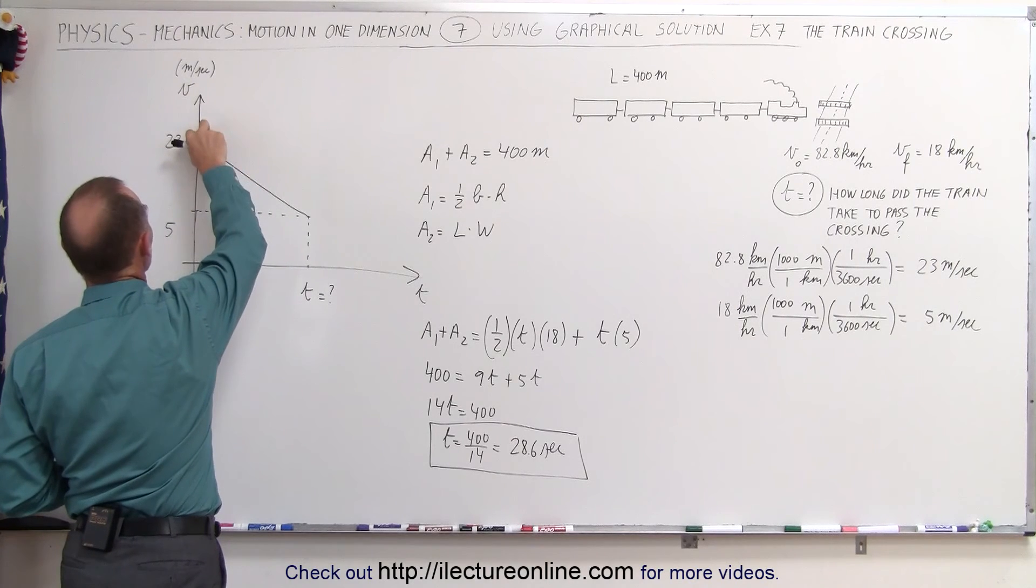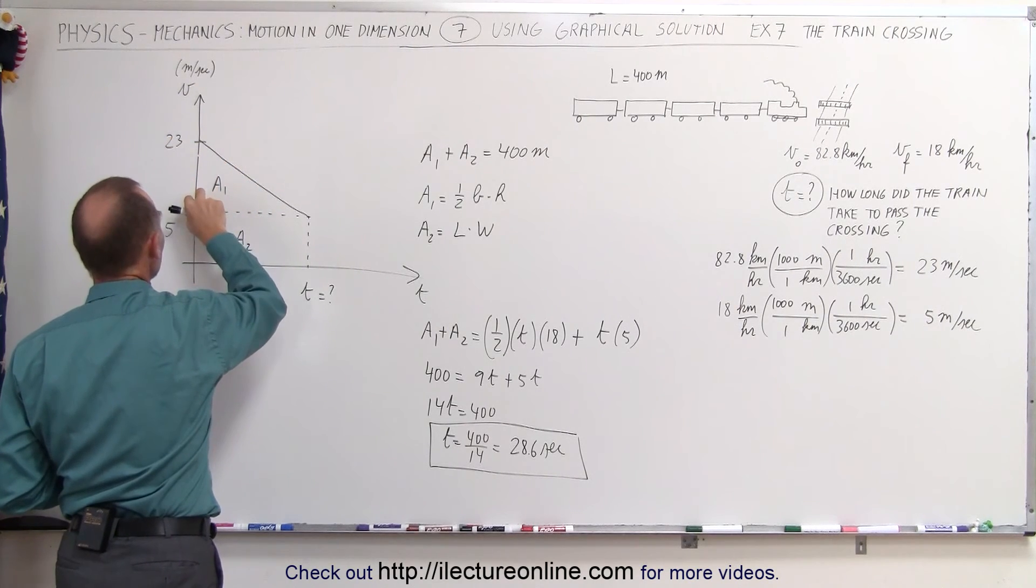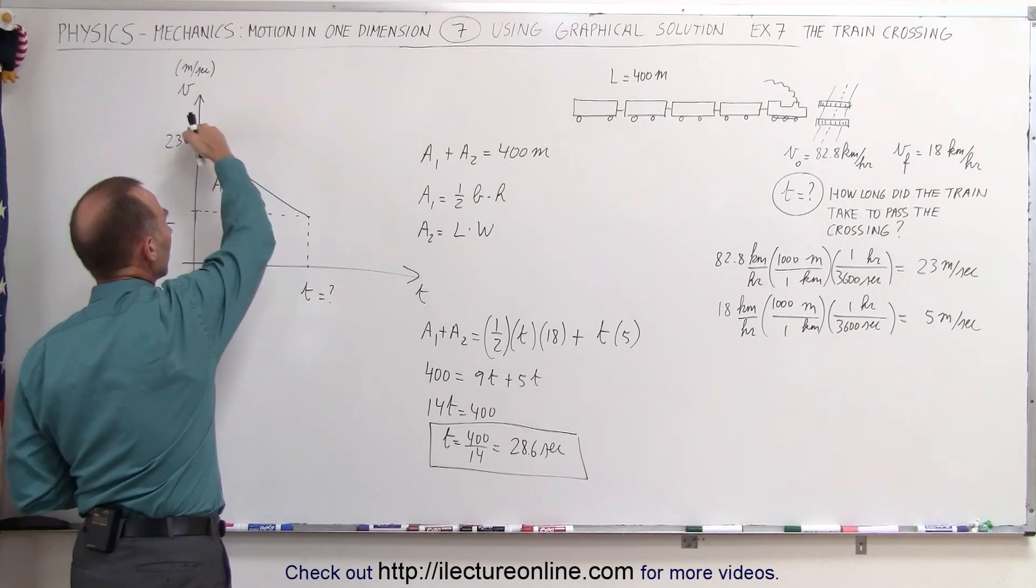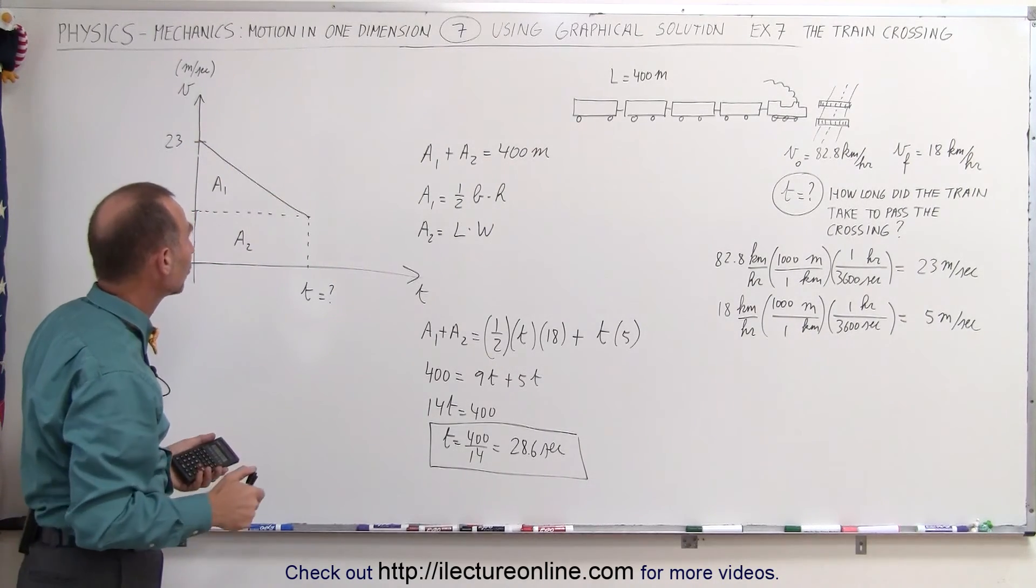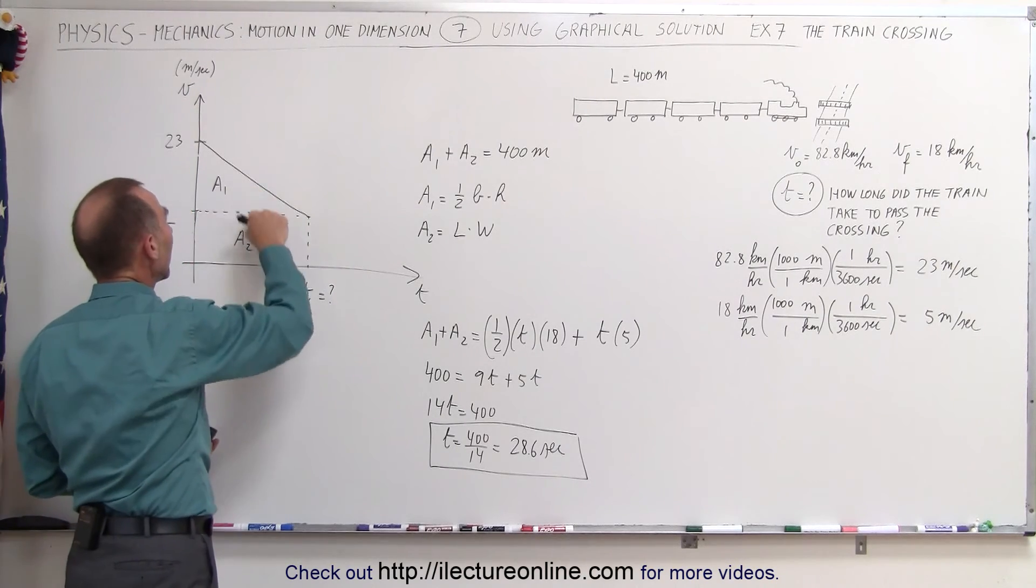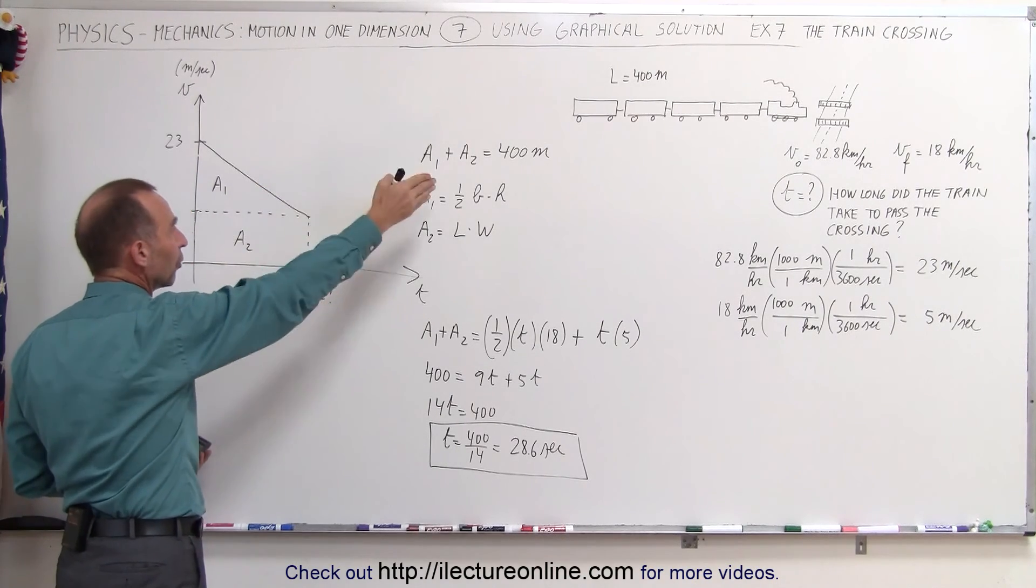The height is velocity, we start at 23 meters per second, we slow down to 5 meters per second. Remember that the slope of that line would be the acceleration of the train, in this case a negative acceleration. We can add up the two areas, we know the two areas need to add up to 400 meters.